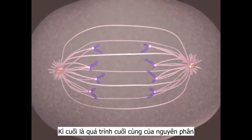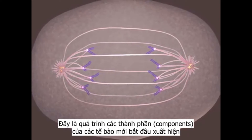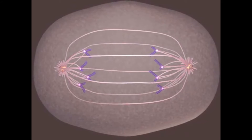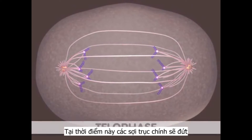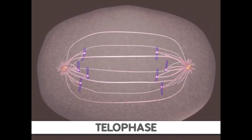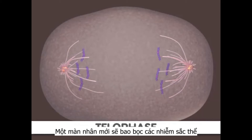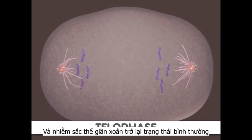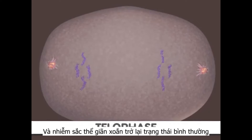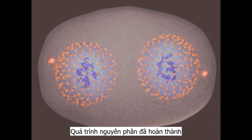Telophase is the final stage of mitosis. It is here the components of the new cells begin to appear. The spindle fibers are broken up, a new nuclear membrane surrounds the chromosomes at the end of each cell, and the chromosomes uncoil and return to an uncondensed state. Mitosis is now complete.